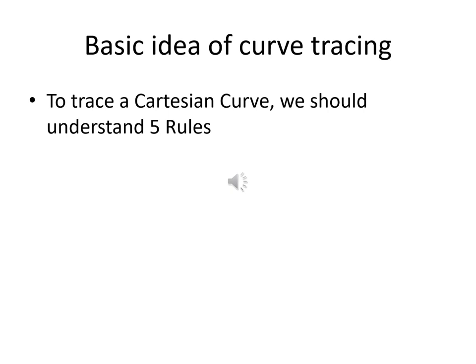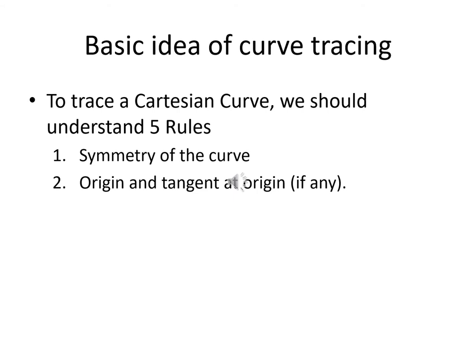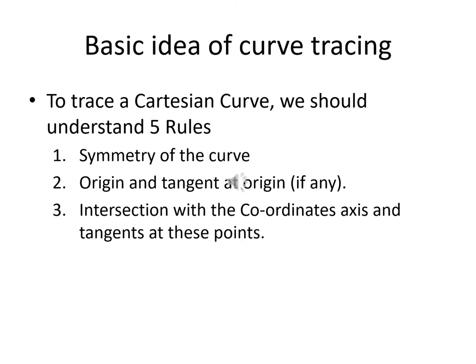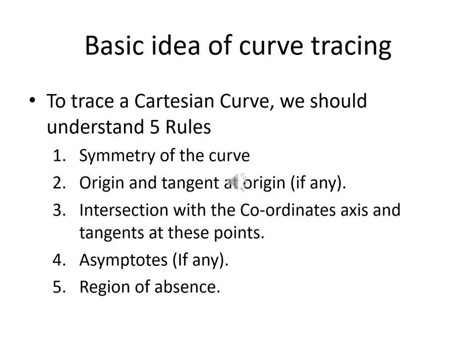To trace a curve we should understand five rules. Rule one is symmetry of the curve — we need to check the symmetry of the curve. Rule two: whether your curve is passing through the origin or not, and if so, find the tangent at the origin. Rule three: find the intersection points with the coordinate axes and find the tangent at those points. Rule four: asymptotes. Rule five: region of absence — find the values of x or y where the curve does not exist.